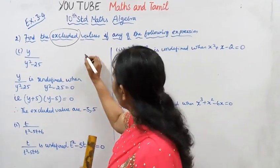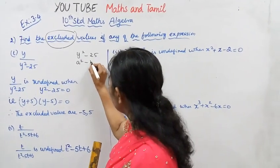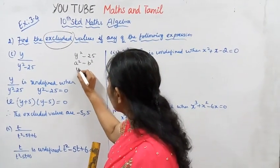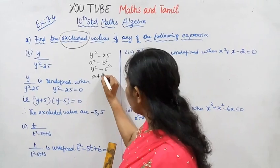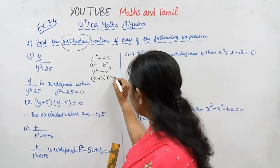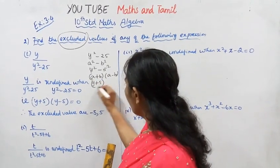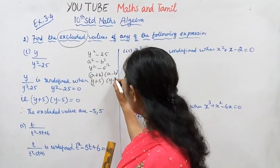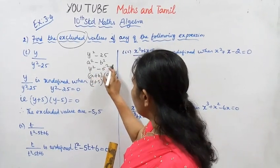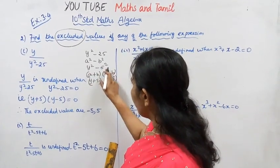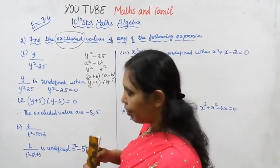We factorize y squared minus 25. Using the identity a² − b² = (a − b)(a + b), we get y² − 5² = (y + 5)(y − 5).